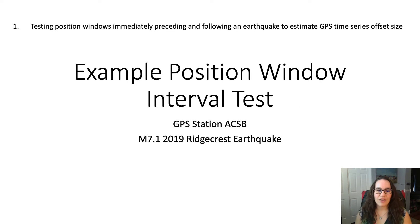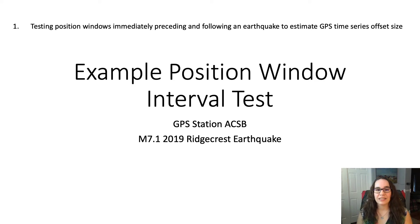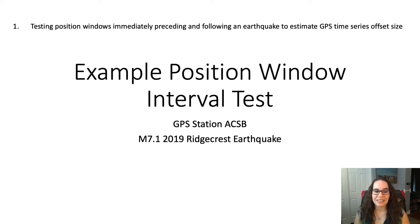For the position window testing that we did, I wanted to show you an example from the 2019 magnitude 7.1 Ridgecrest earthquake from GPS station ACSB near San Diego.